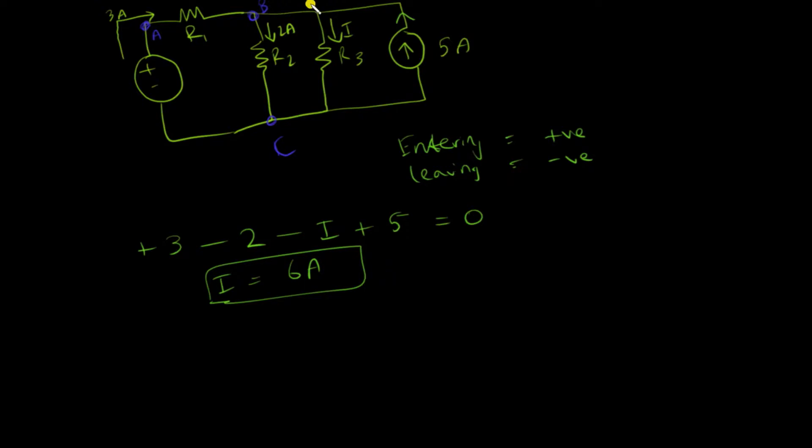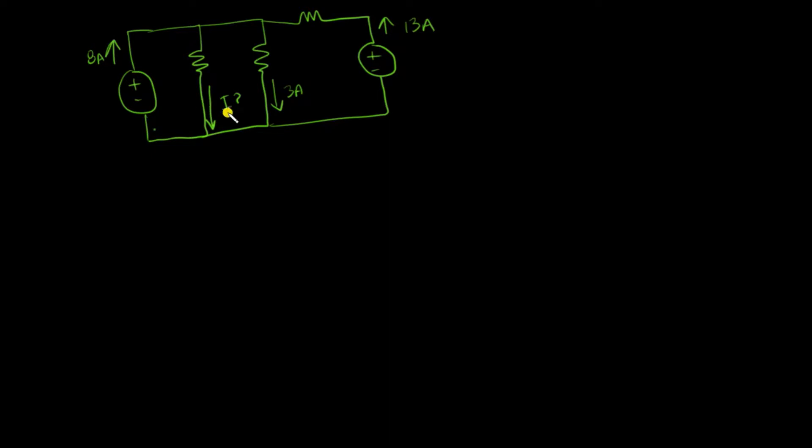I'll show another example. In this circuit I need to find the current I, so the first step is to mark all the nodes. I can start from this point and this entire portion is one node.